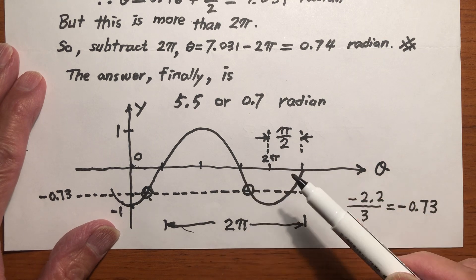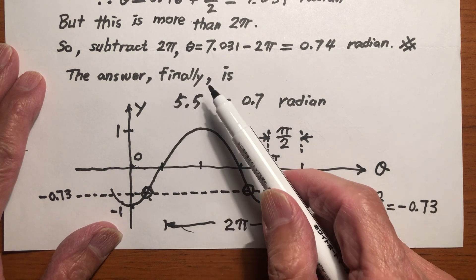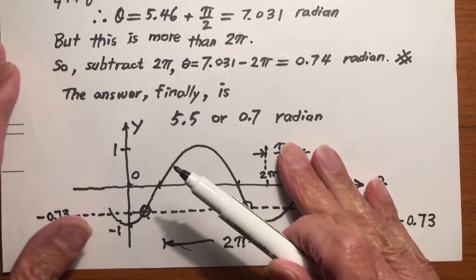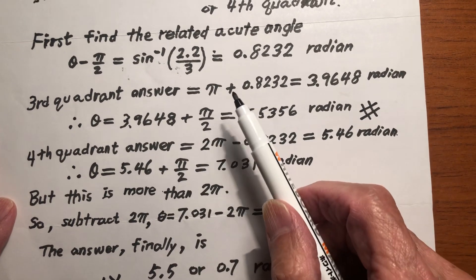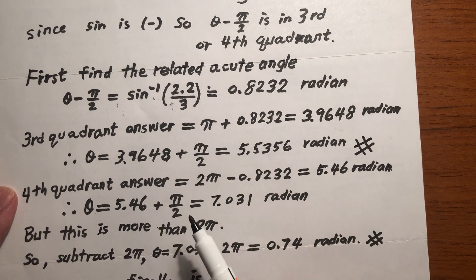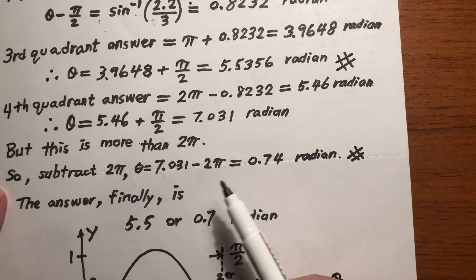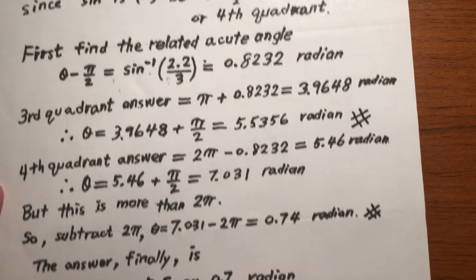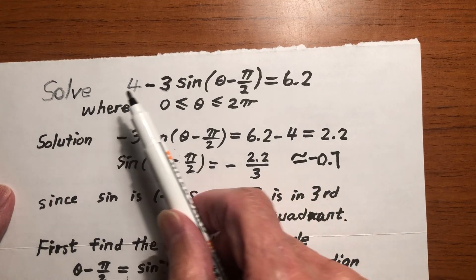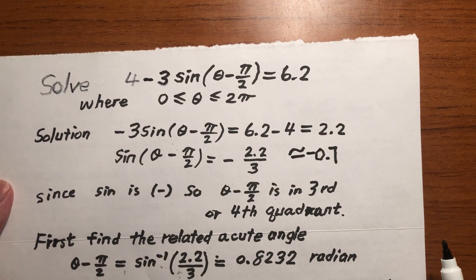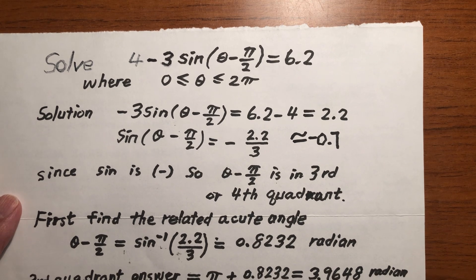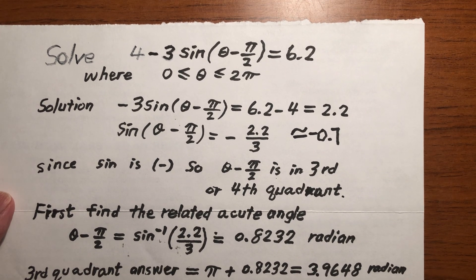My student got the answer 5.5 but not 0.7, because he didn't know you can subtract 2π — since 2π is the period, you can subtract it to bring the angle back into the valid interval and still satisfy the original equation. So that's it for this question. If you have any questions, just send a comment to my YouTube channel. Thank you for watching. Goodbye.